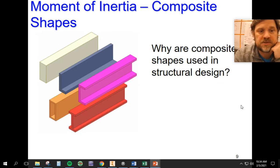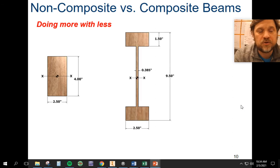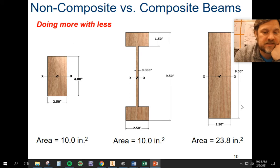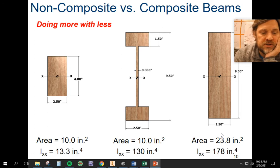Why are composite shapes different and why do we use them in design? Well, we can do more with less. So if we look at these items, the first two have the same area. Now the second and the third one have the same width and height. Let's look at their moment of inertias and we can see for area wise that the first and the second have the same amount of area, but the I-beam has 10 times the moment of inertia.